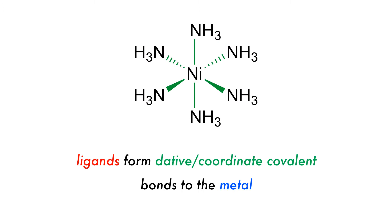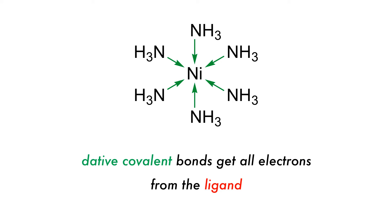Ligands are bonded to the metal via a special type of bond, the dative covalent or coordinate covalent bond. The dative covalent bond is different from the usual covalent or ionic bonds because in dative covalent bonds, all the electrons are donated from one atom to another.